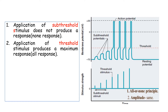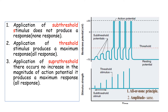A threshold stimulus produces excitability in the nerve and you can see the generation of a spike potential. Even if we apply a supra-threshold stimulus — one greater than the threshold — there is no increase in the magnitude of the action potential. The potentials produced for threshold and supra-threshold stimuli are equal in height or amplitude.